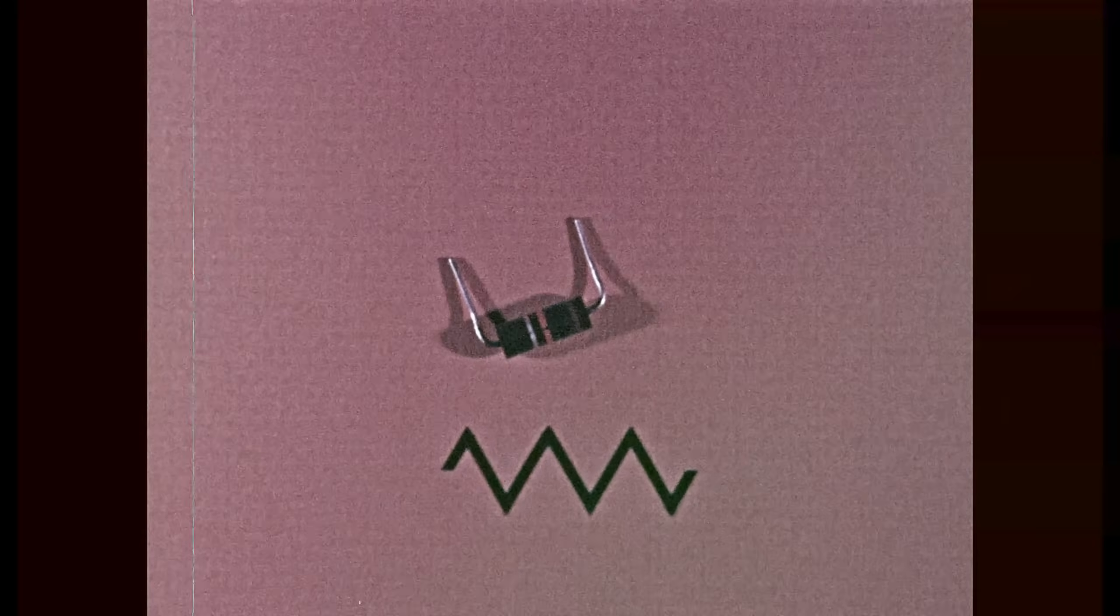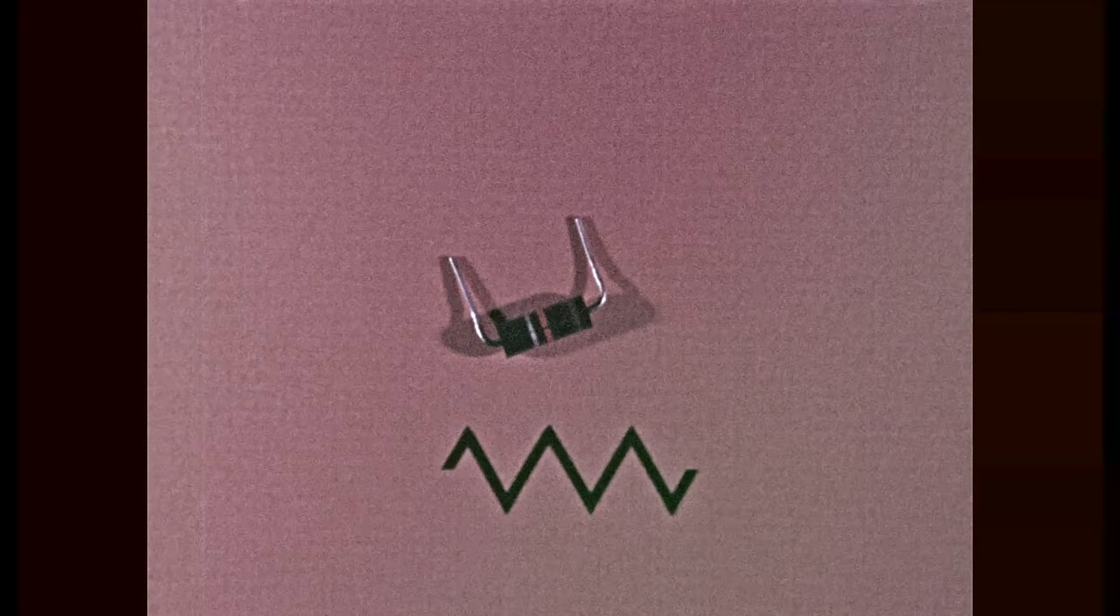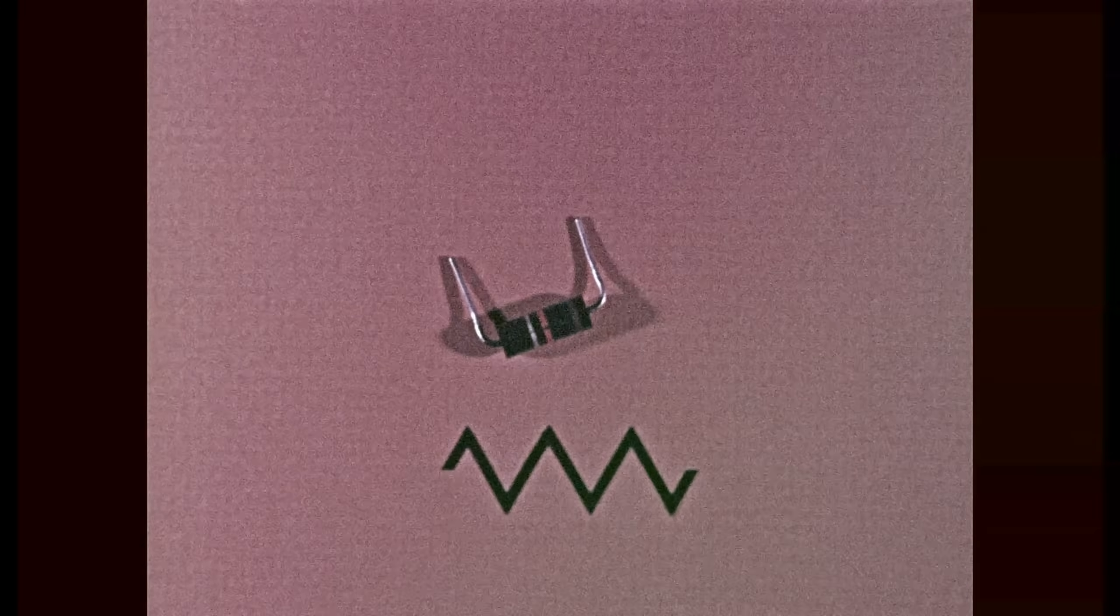A resistor opposes the flow of electrons and can be used to reduce voltage. Variable resistors are used as volume controls.